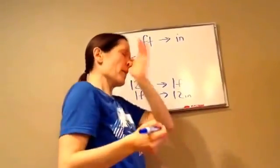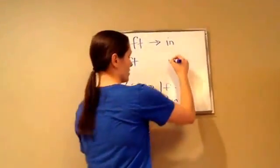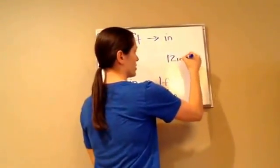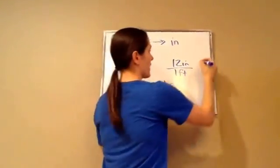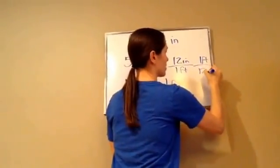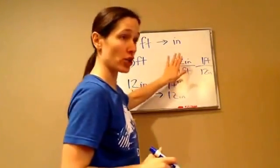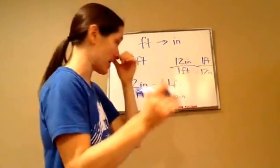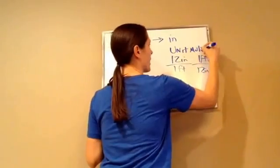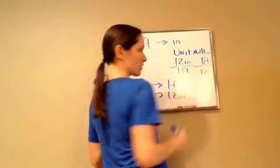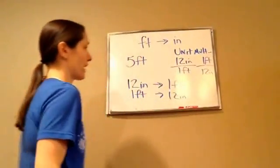1 foot is the same thing as 12 inches. Now they're wanting you to learn to write this like this: 12 inches is the same thing as 1 foot, and 1 foot is the same thing as 12 inches. This is called a unit multiplier — write that down in your notes.